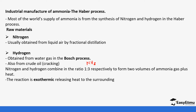To form two volumes of ammonia gas plus heat — the reaction is very exothermic, so it releases heat to the surroundings. This property of it being exothermic is going to determine some of the pressures and temperatures that are going to be used in the large scale process. As you can see from this general equation, nitrogen reacts with hydrogen to form ammonia, and heat is given out.